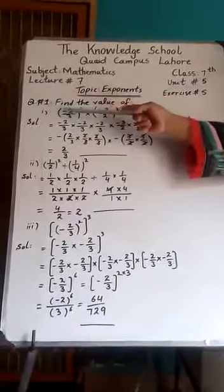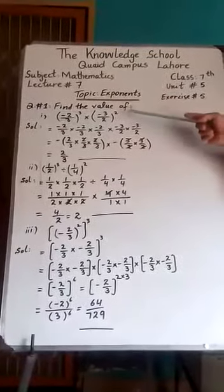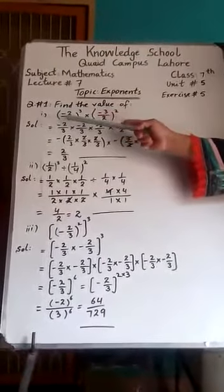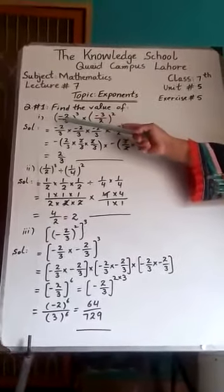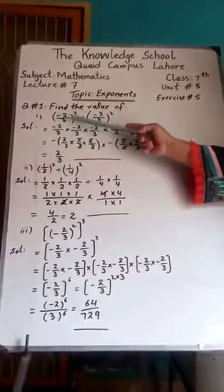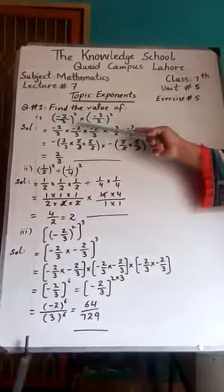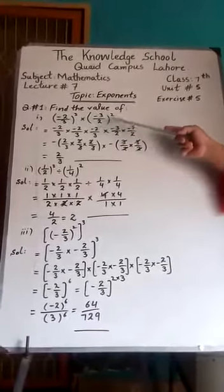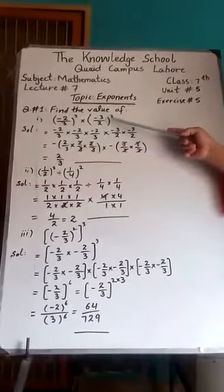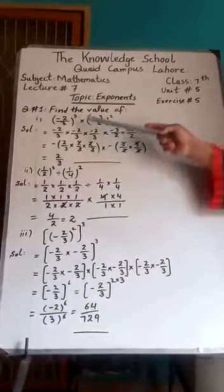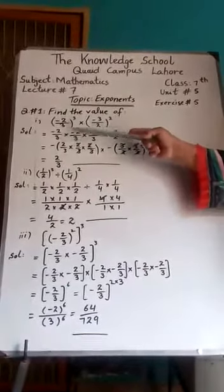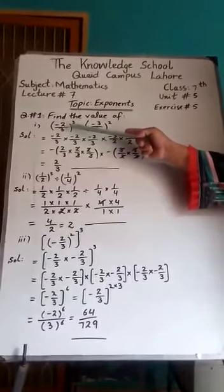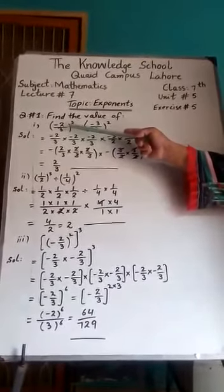Question number 1: find the value. Part 1 is minus 2 by 3, whole cube, multiply by minus 3 by 2, whole square. Students, we will solve first fraction with exponents.